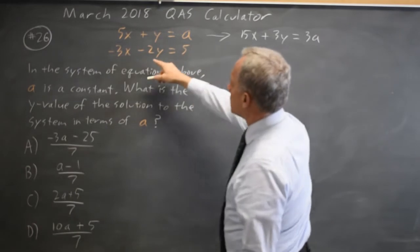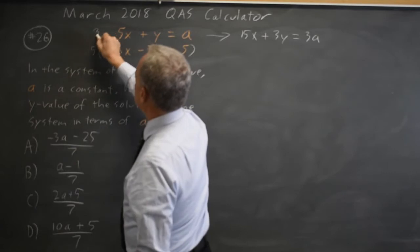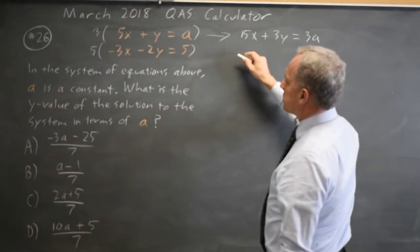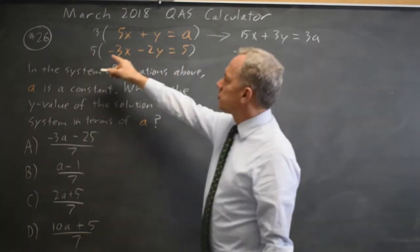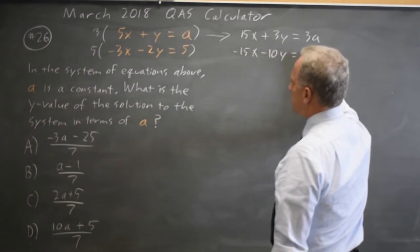And the same thing for the second equation, which I'll multiply by 5, and that gives me negative 3x times 5 is negative 15x. Negative 2y times 5 is negative 10y, and 5 times 5 is 25.